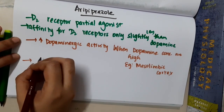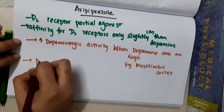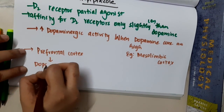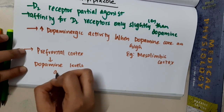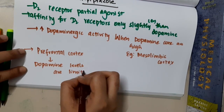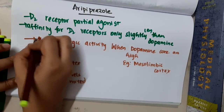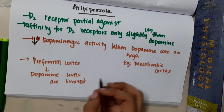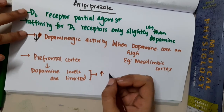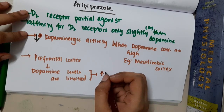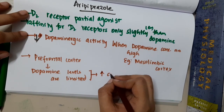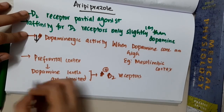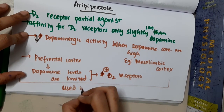Whereas in the prefrontal cortex, where dopamine activity is low, if dopamine levels are limited, aripiprazole will increase or activate the D2 receptors. That is the reason why it is used in schizophrenia.